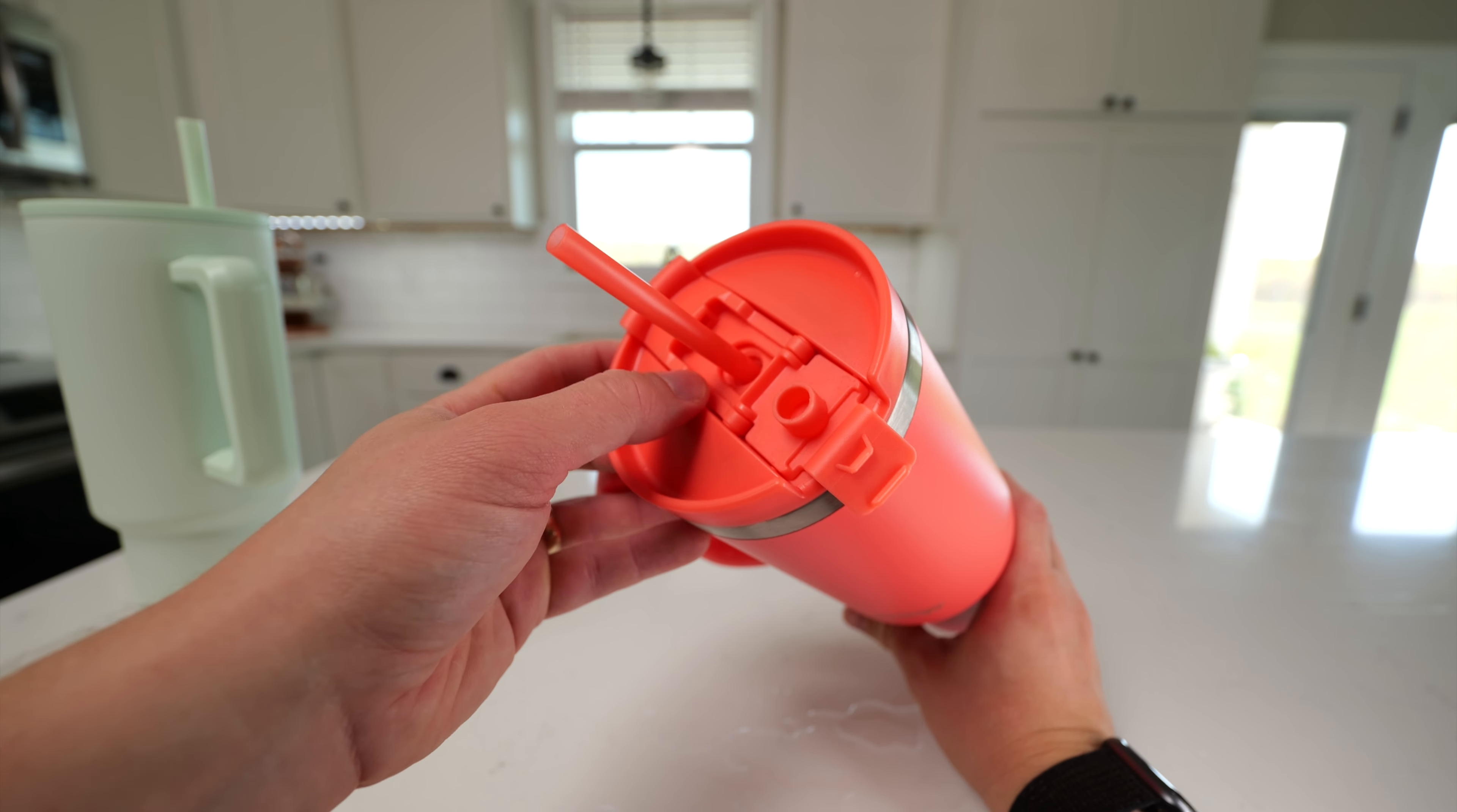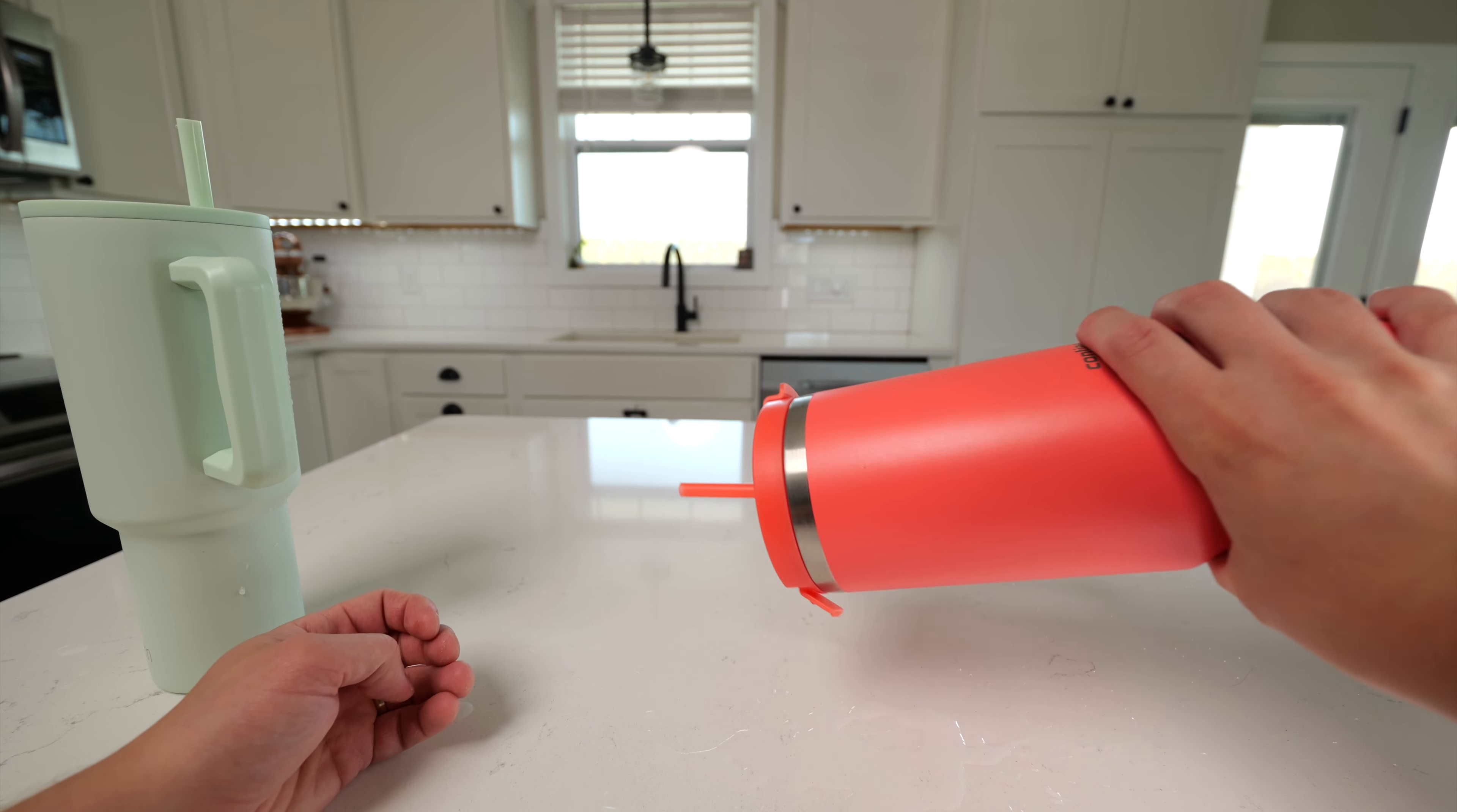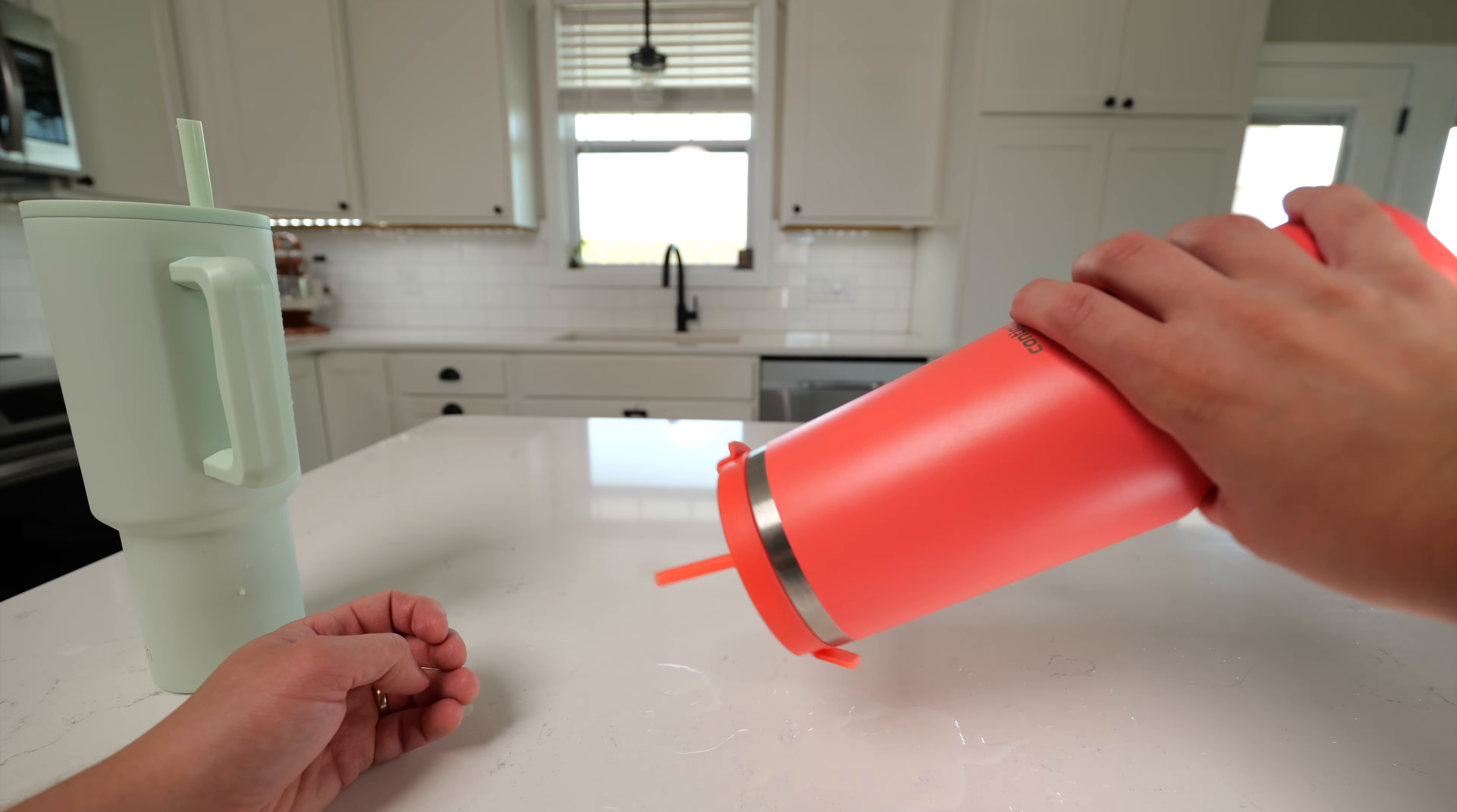The Contigo is also very similar. It has a silicone seal on the inside of it, so on its side, no water drips out of it, but water can come out the straw if it flips over like that.